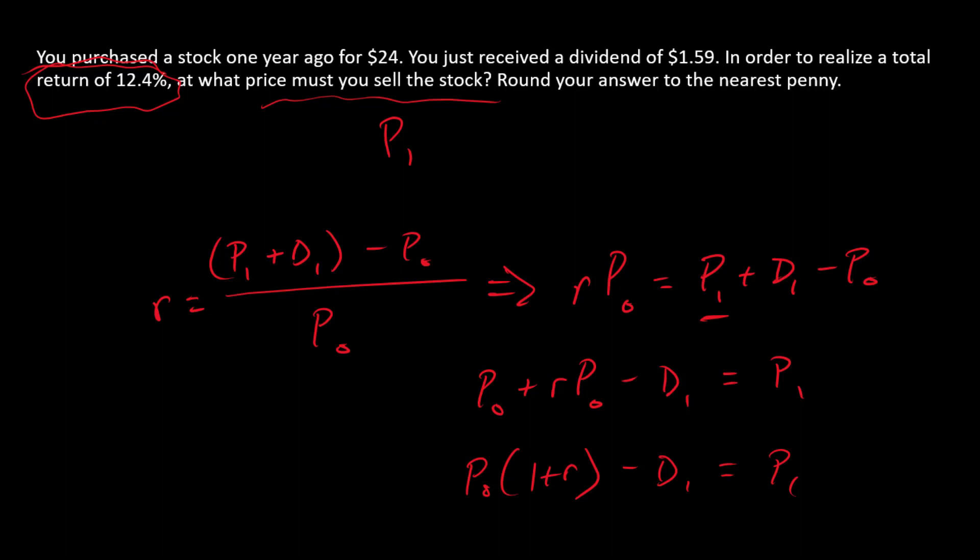But in any regard, I'm going to insert some numbers now. So P0 is 24. We need 12.4%, so 1.124 minus the $1.59. And so P1 is $25.386.